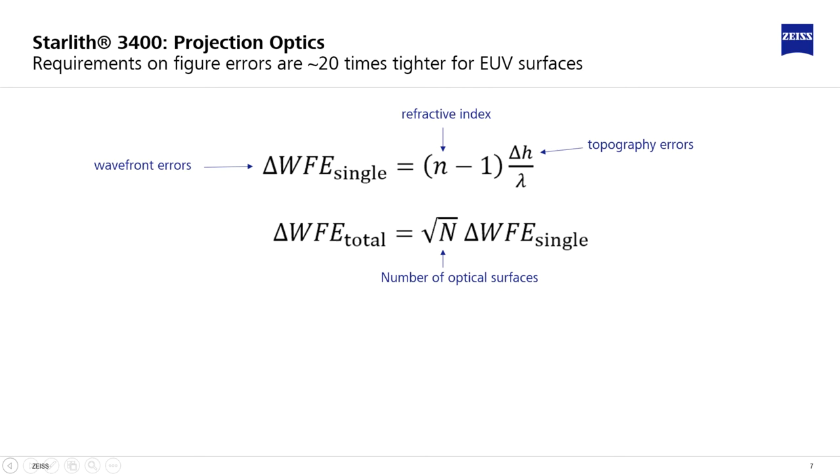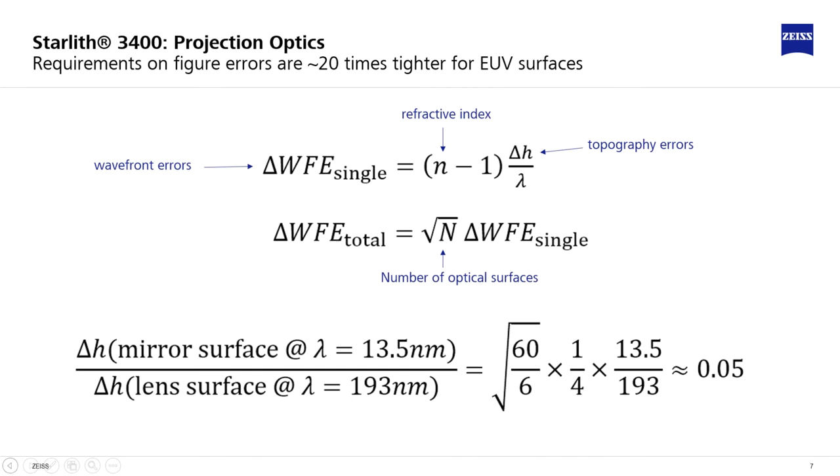The total wavefront error for all lens elements has to be multiplied by the square root of N. N is the number of optical surfaces.